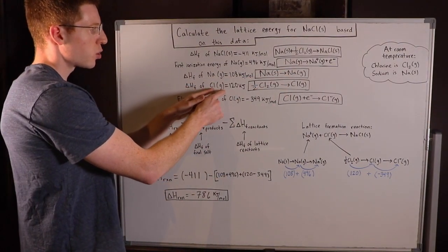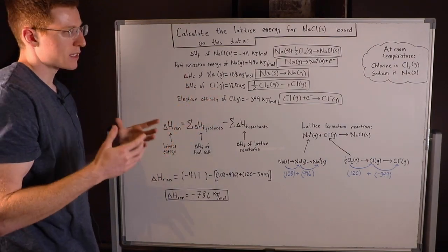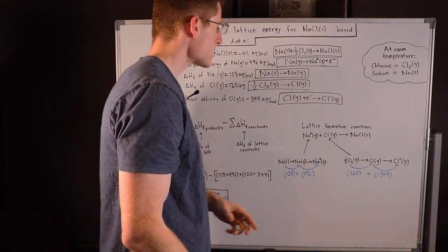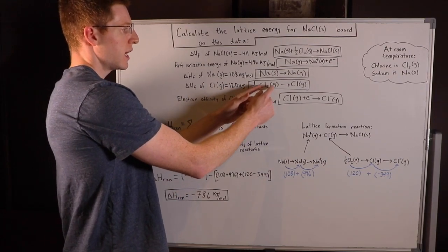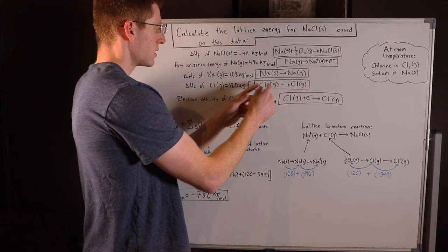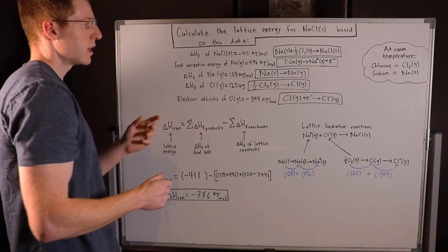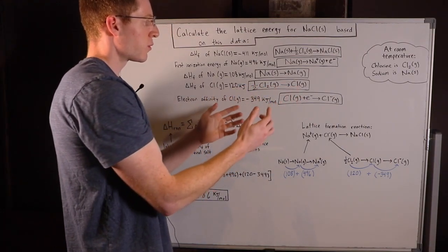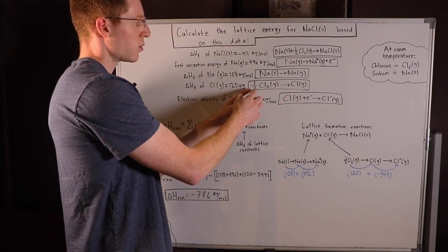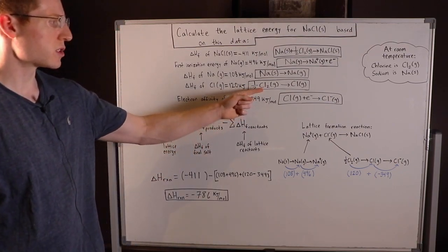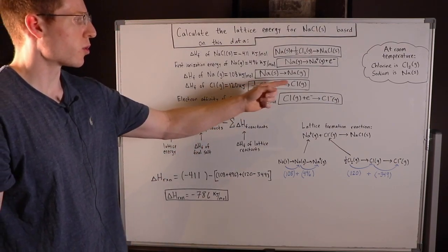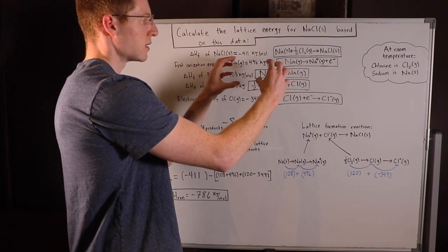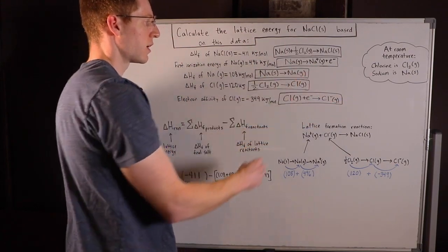The heat of formation of chlorine gas — we find the standard state of chlorine, which is Cl₂ gas. We put that as our reactant, and we're making chlorine gas as our product. So the difference here is we're going from Cl₂ to Cl. We put a one-half in front of the Cl₂ to balance this equation, because we only want one chlorine on either side. We're essentially taking a Cl₂ and splitting it up, and we just have one Cl.